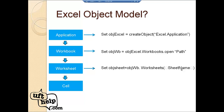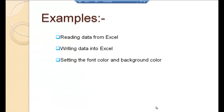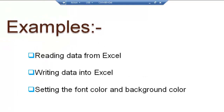Now that we're into a particular sheet, we want to fetch or set data — read or write operations — on a particular cell. We use the sheet object and the Cells method to work with a particular row or column of the Excel sheet. Using this Excel object model in UFT, we'll see examples of how to read data from Excel, write data into Excel, and set font color or background color.